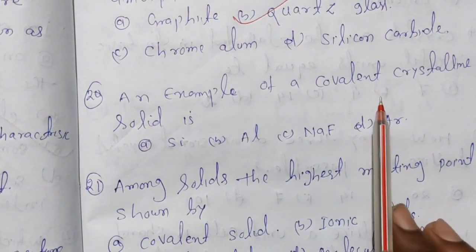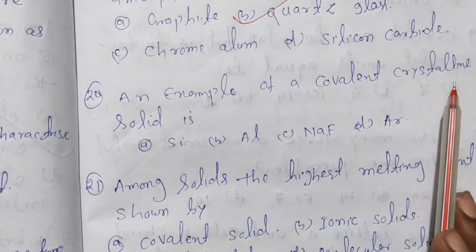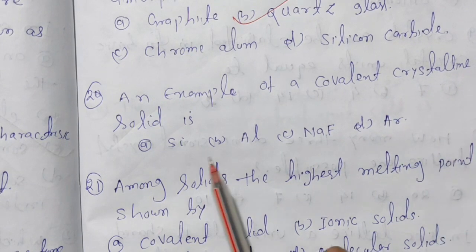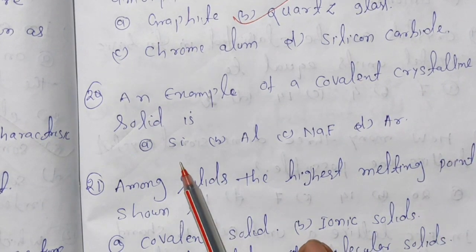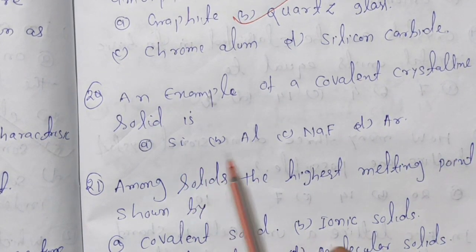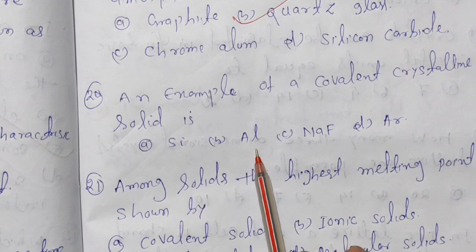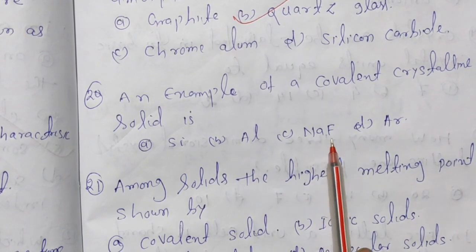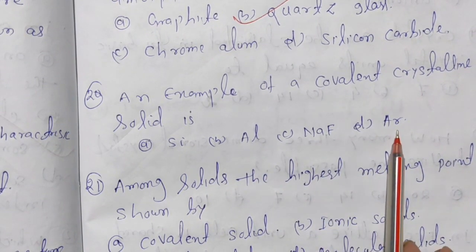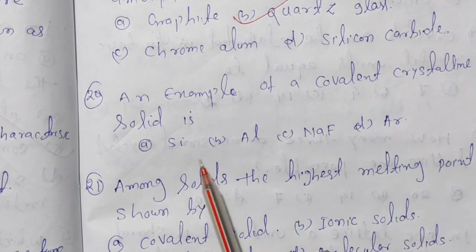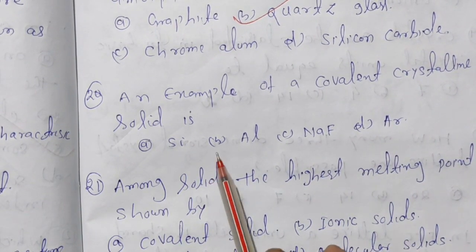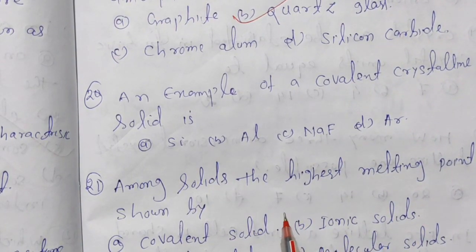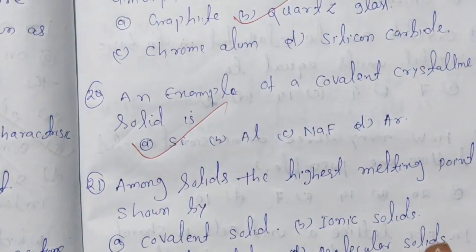Question 20: an example of a covalent crystalline solid. The options are silicon, aluminium, sodium fluoride, or argon. Silicon is a covalent crystal, so the answer is option A.